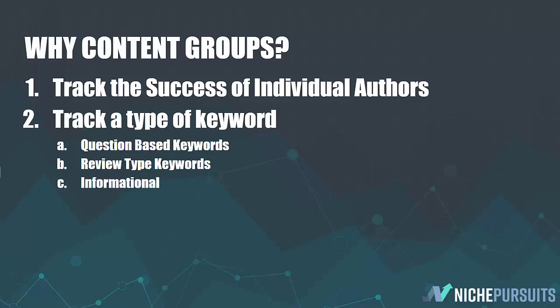Or you might want to track review-type keywords, or informational articles if you're producing a lot of informational content — is that getting more traffic? Or you might want to track the traffic stats of your buying guides. Because you have a lot of different types of keywords you're targeting, instead of getting overwhelmed with information when you look at your Google Analytics — especially as you have more and more content — you don't want to just see the stats for all 200, 500, or 1,000 articles. You want to quickly see if your new strategies are working, and creating a content group is one way to do that.